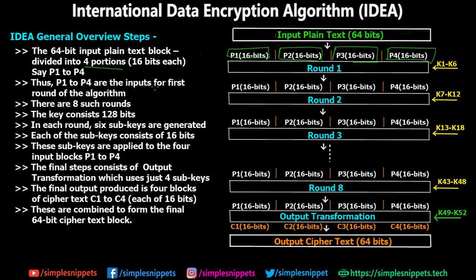P1 to P4 are the inputs for the first round of the algorithm. There are 8 such rounds — we'll see what happens in one single round and then everything in that round is repeated 8 times. The key consists of 128 bits, but in each round 6 sub-keys are generated and each sub-key consists of 16 bits. So out of the 128-bit key we generate 6 sub-keys of 16 bits per round.